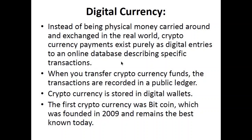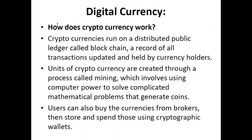Up to now, Bitcoin remains at the top — it is the most expensive and best-known cryptocurrency in the world. Cryptocurrencies run on a distributed public ledger called blockchain. A ledger is an accounting term referring to a format that records multiple financial transactions. A record of all transactions is updated and held by currency holders. Units of cryptocurrencies are created through a process called mining — no matter which crypto you hold, if you want to create new units you need to do mining.